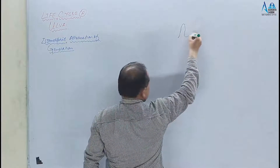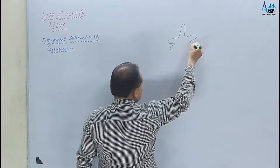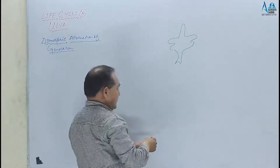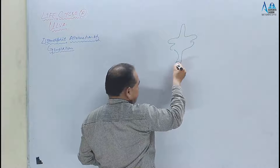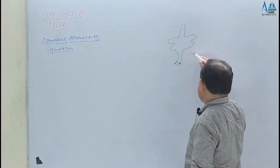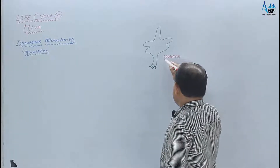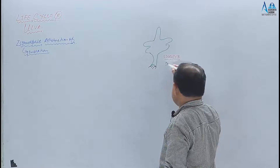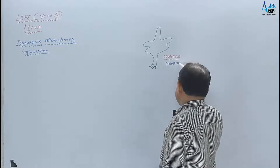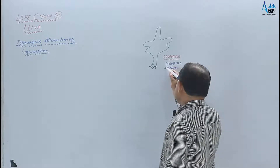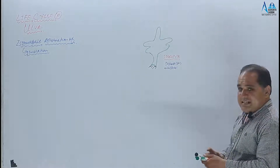Life cycle ko start karte hain. Yeh jo hamara thallus liya hai, this is considered as the sporophyte. Ye holdfast hain, aur is structure ko hum sporophyte naam dete hain. Sporophyte diploid hota hai — 2n — aur chromosomes ki number 26 hoti hai.